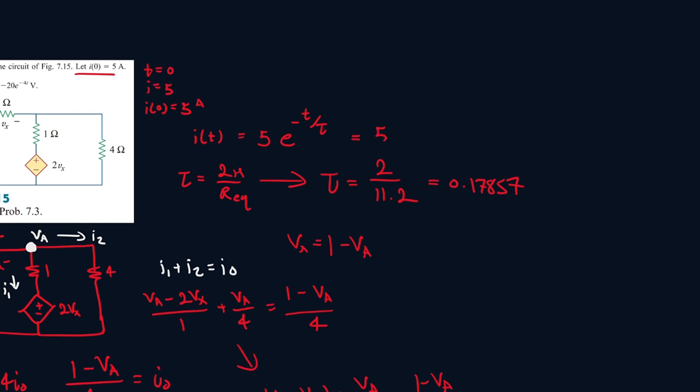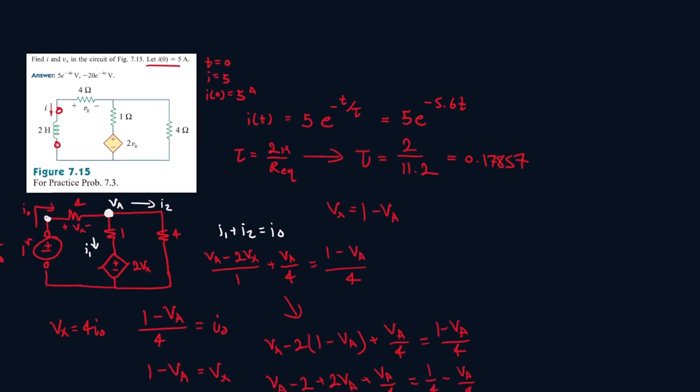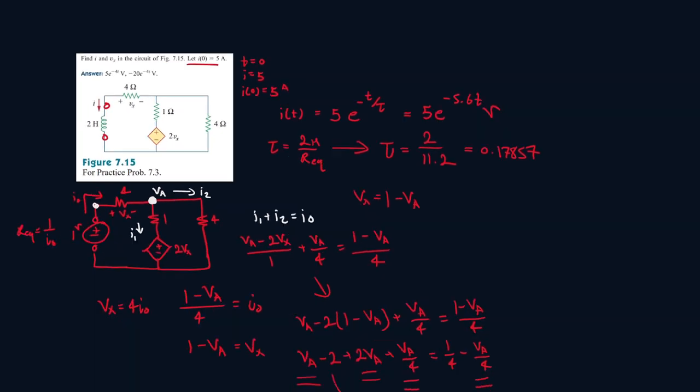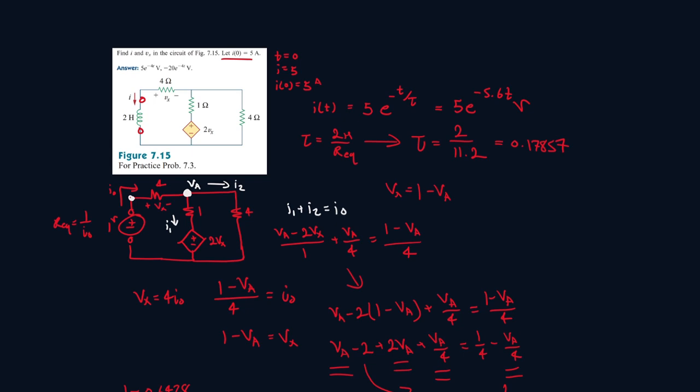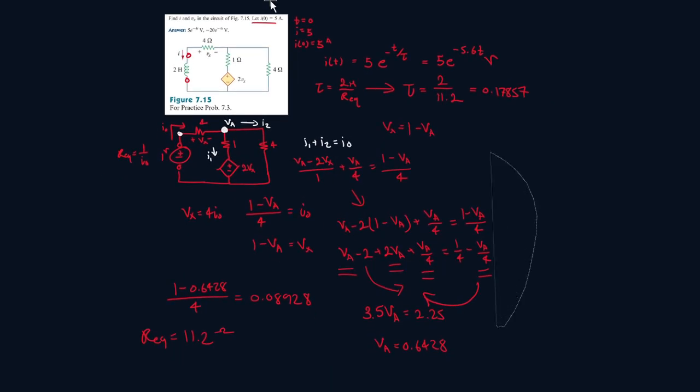So it will be 5e to the power of t over the time constant, so t over 0.17857. And that's pretty much just 5.6t. Alright, so we got our formula for our current. Now I'm going to erase all this because now we have to find Vx.